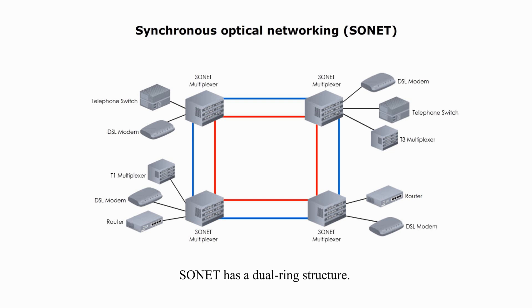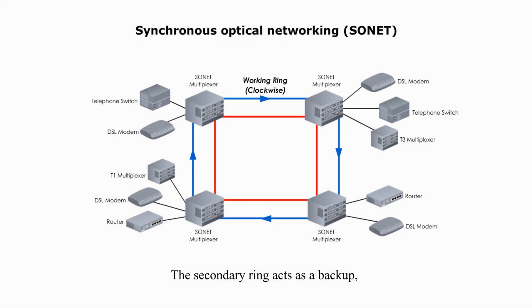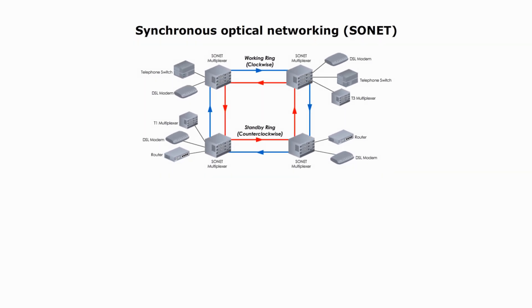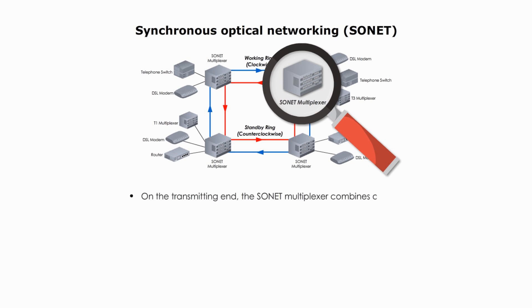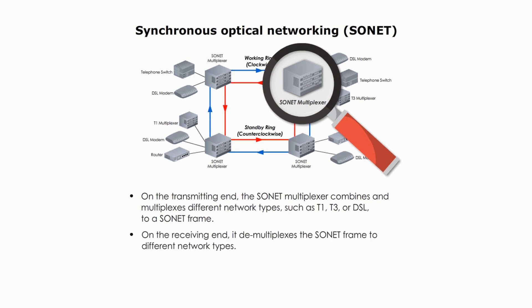SONET has a dual ring structure. One ring acts as the primary route in a clockwise direction, and the second ring acts as a backup running counterclockwise. SONET multiplexers play an important role: on the transmitting end, they combine and multiplex different network types such as T1, T3, or DSL into a SONET frame. On the receiving end, they demultiplex the SONET frame back to different network types, and connections can easily be added or removed.